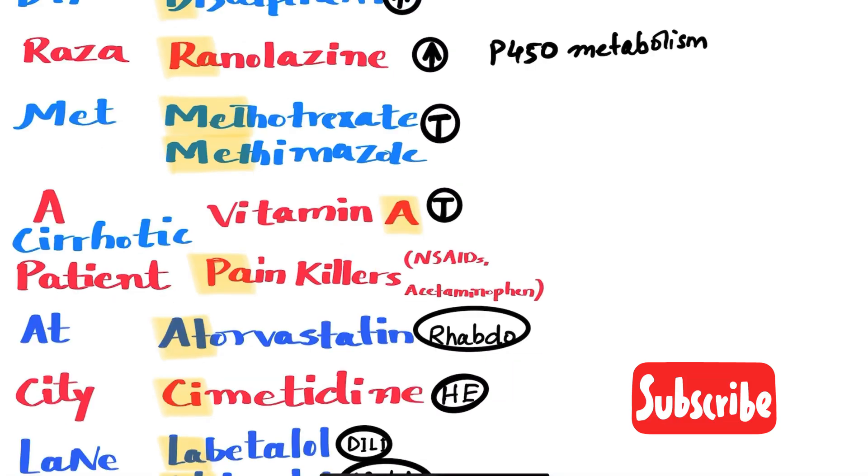Med stands for methotrexate and methimazole. Methotrexate is an antimetabolite and methimazole is an antithyroid medication. We have DMARDs as alternatives for rheumatological conditions in case we cannot give patient methotrexate.